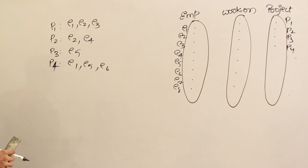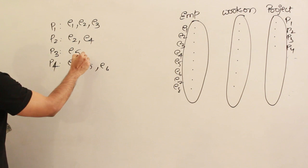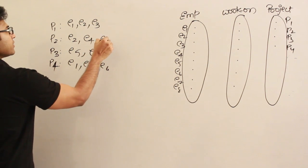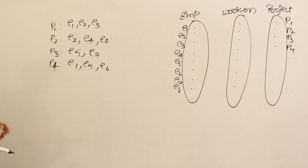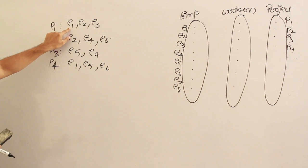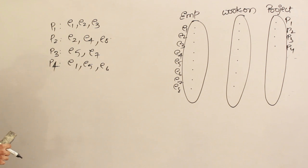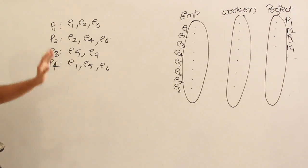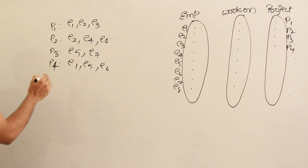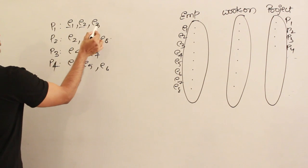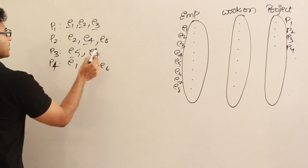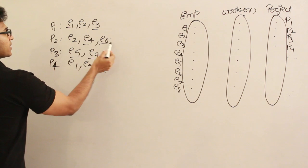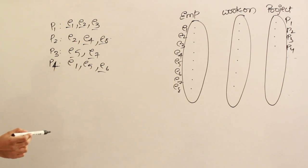There are four projects and these many employees — is any employee left out? Let's put E7 and E8 as well. According to the specification, every project is supposed to have at least one employee, meaning many employees can work on that project. And every employee is supposed to work on at least one project, therefore all employees have to be covered. E1, E2, E3, E4, E5, E6, E7, E8 — every employee is working on at least one project, so the requirements are met.